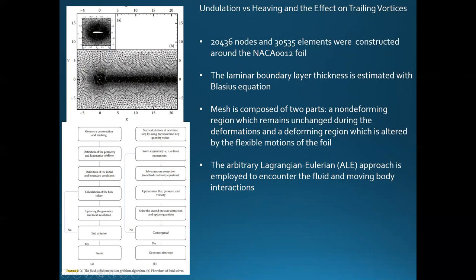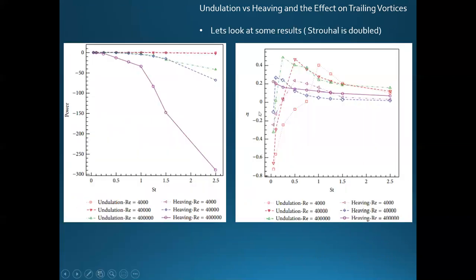They also have a feedback loop in the simulation to decide if it's convergent or if the simulation should end. Looking at the power results: for undulation — orange, red, and green with increasing Reynolds number — the lower Reynolds numbers use little power, but at very high Reynolds number the power needed to swim at the same speed obviously increases.